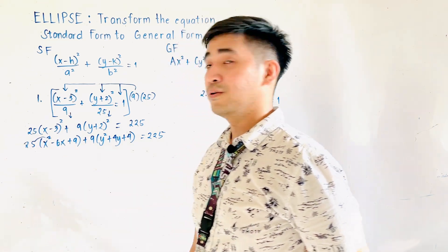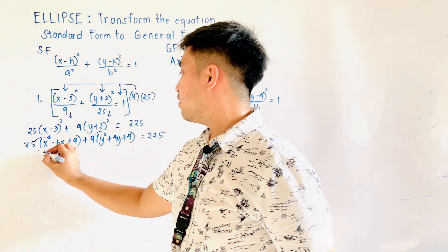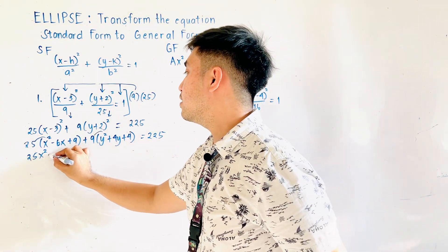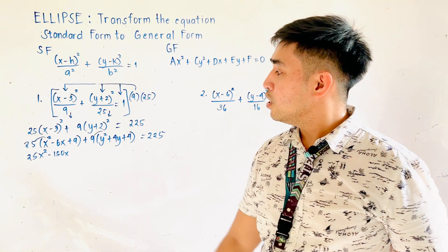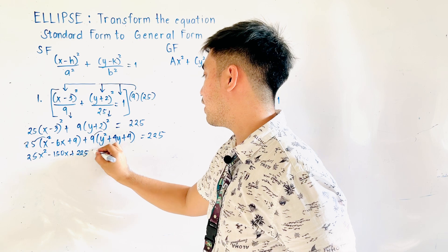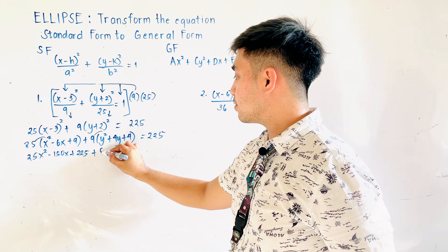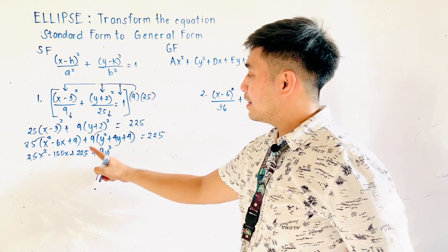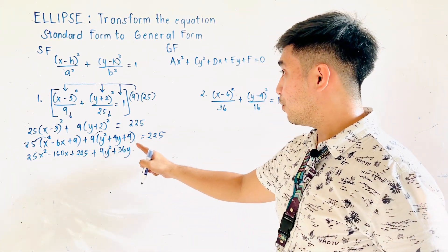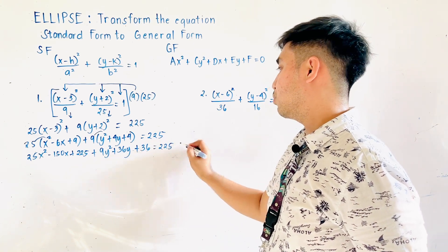We distribute 25 and also distribute 9 to their groups. 25 times x² is 25x². 25 times −6x is −150x. 25 times 9 is +225. Then distributing 9: 9 times y² is 9y². 9 times 4y is +36y. 9 times 4 is +36, and this is equal to 225.